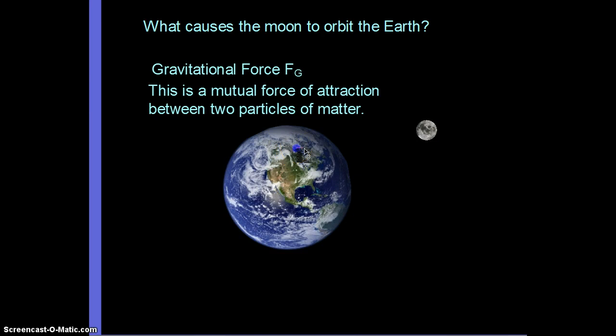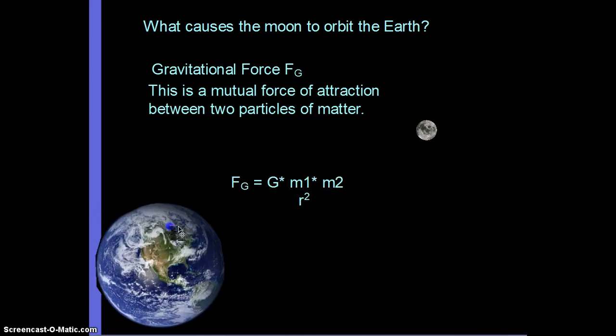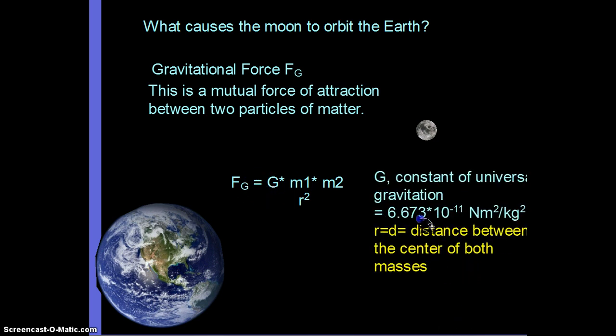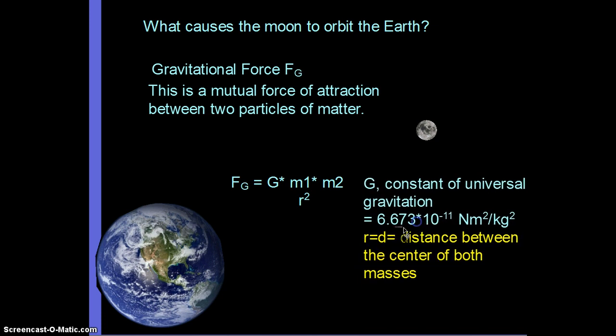How do we calculate it? Well, we use this equation where the force of gravity, the gravitational force is equal to G. What's G? G is the universal gravitational constant. 6.673 times 10 to the negative 11th newton meter squared over kilogram squared. That's the capital G.